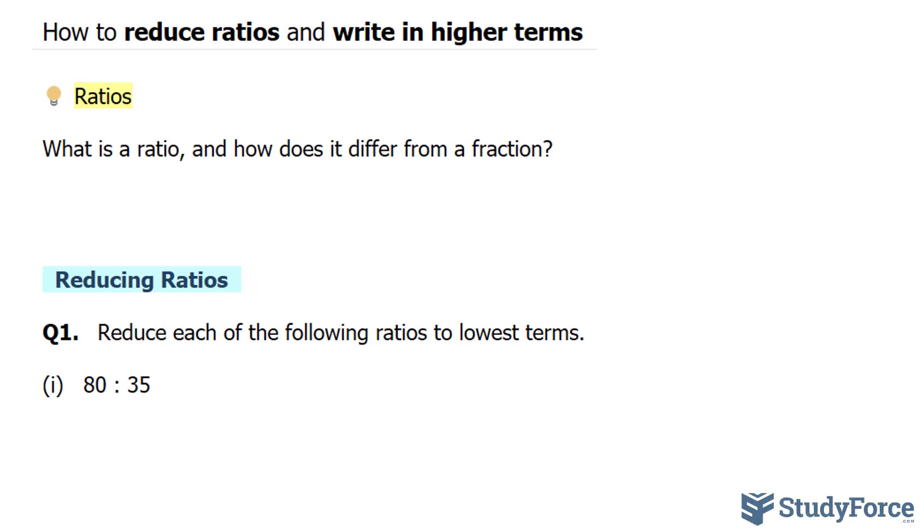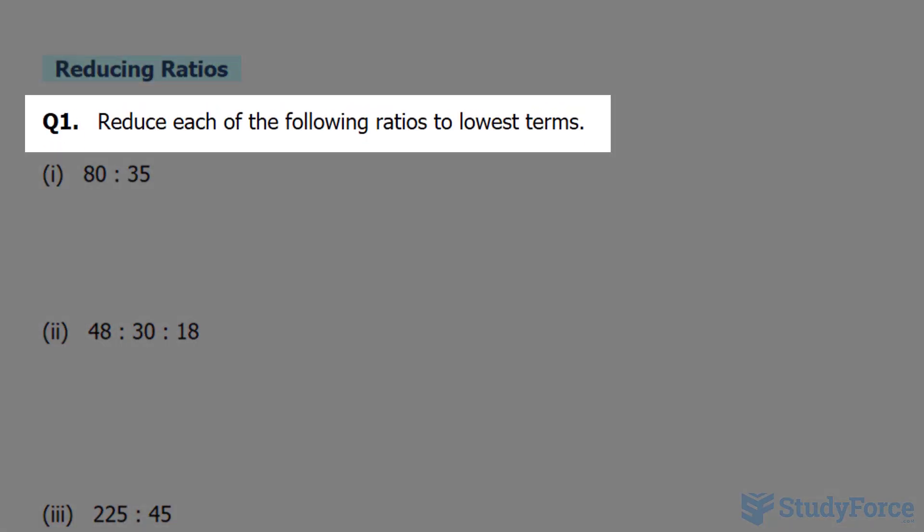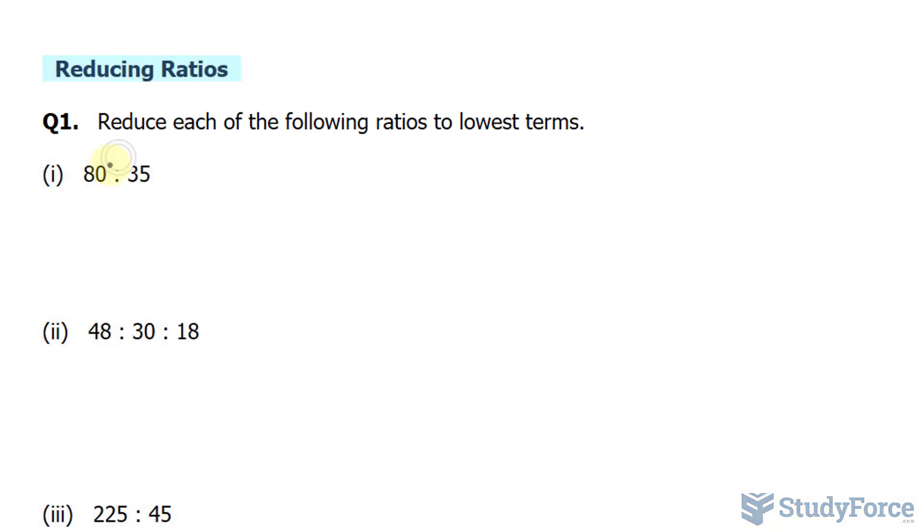With that being said, let's begin by learning how to reduce ratios. Question one reads, reduce each of the following ratios to lowest terms. In the first example, we have 80 and this colon reads to, so 80 to 35.